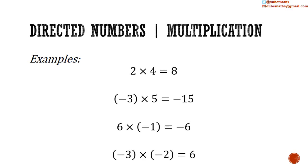And negative 3 multiplied by negative 2: 3 multiplied by 2 is equal to 6. A negative multiplied by a negative is equal to a positive — positive 6.